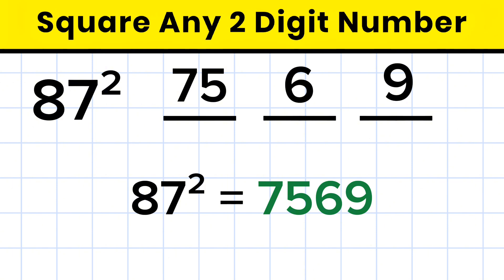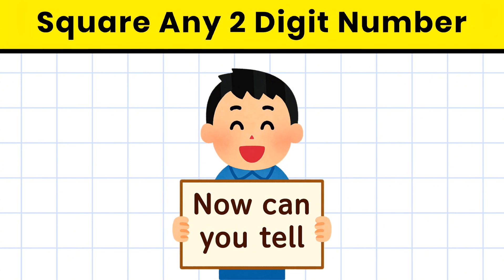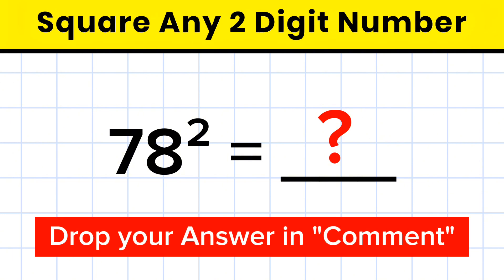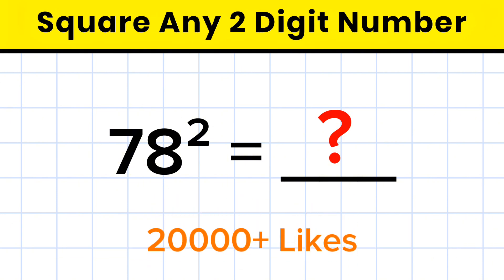Mind blowing, right? So can you find the square of 78 in just 5 seconds? Drop your answer in the comments below. And if this video gets 20,000 likes, I'll make another one showing how to square 3 digit numbers at lightning fast speed.